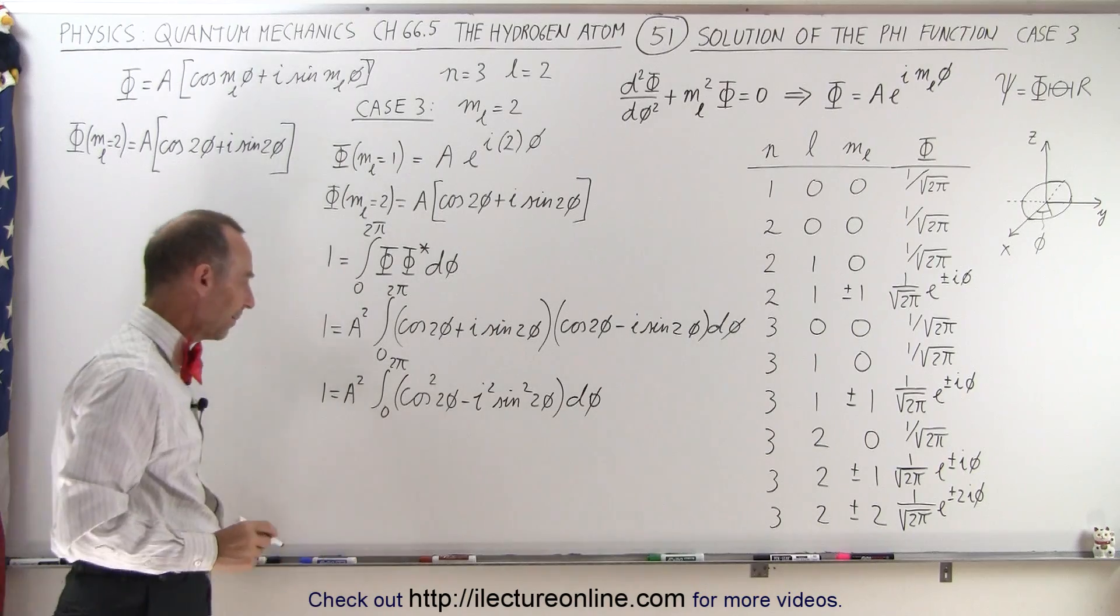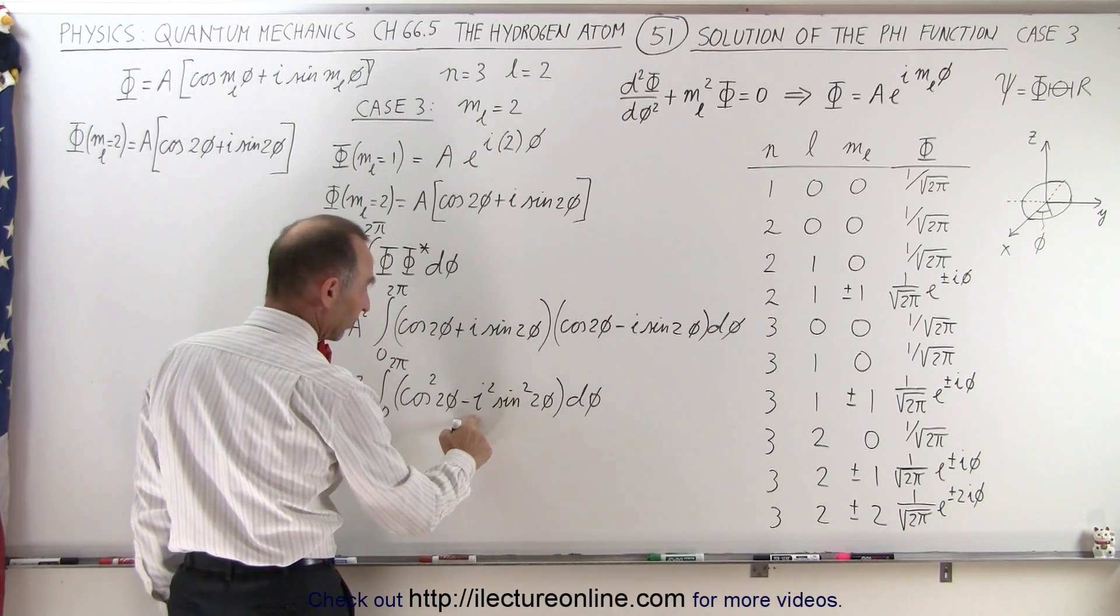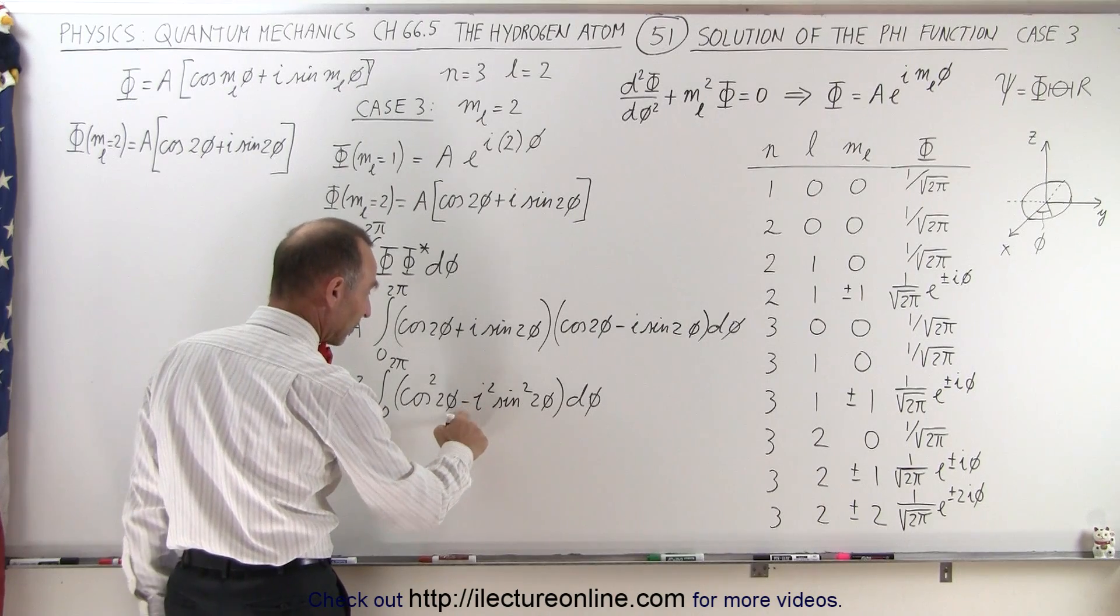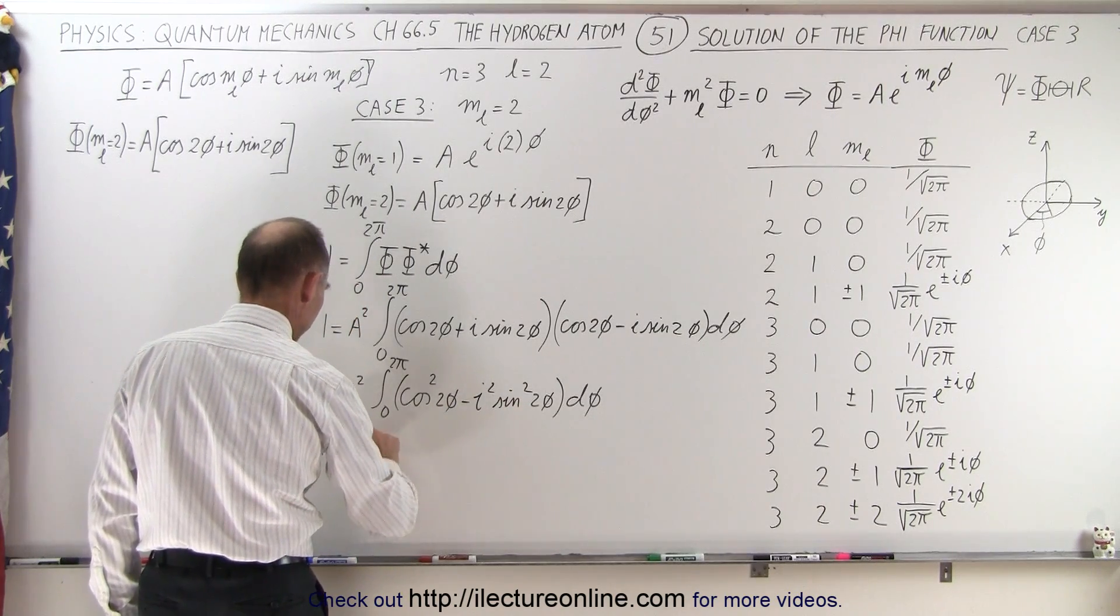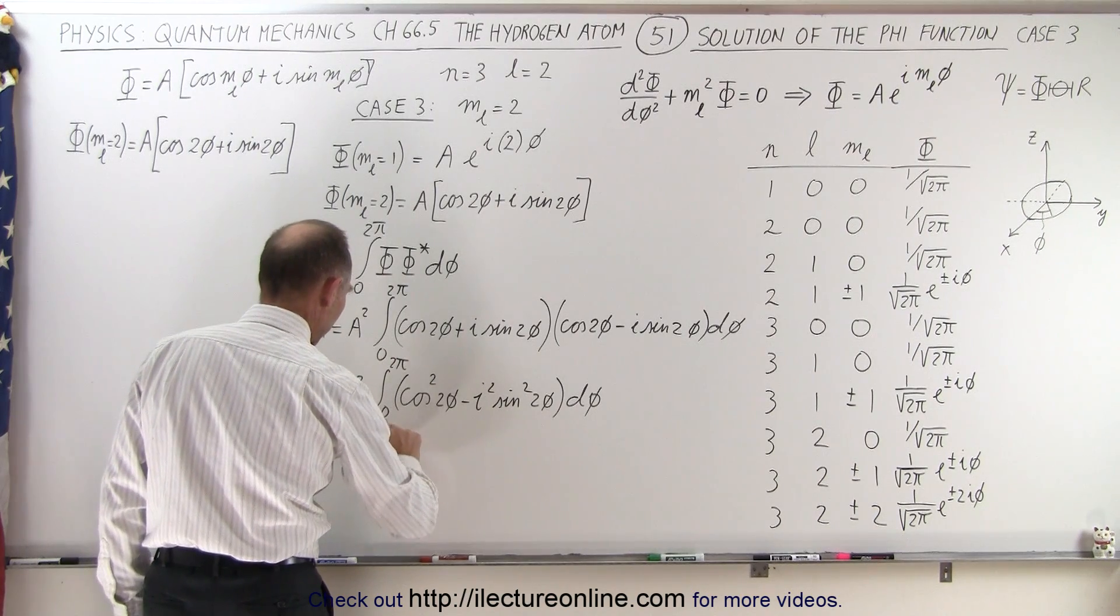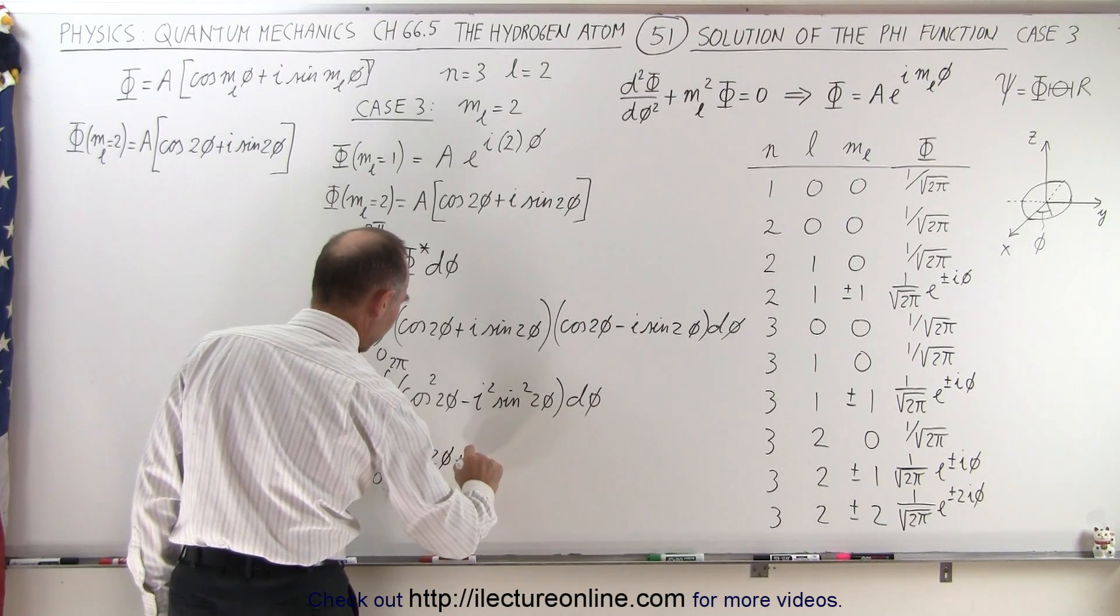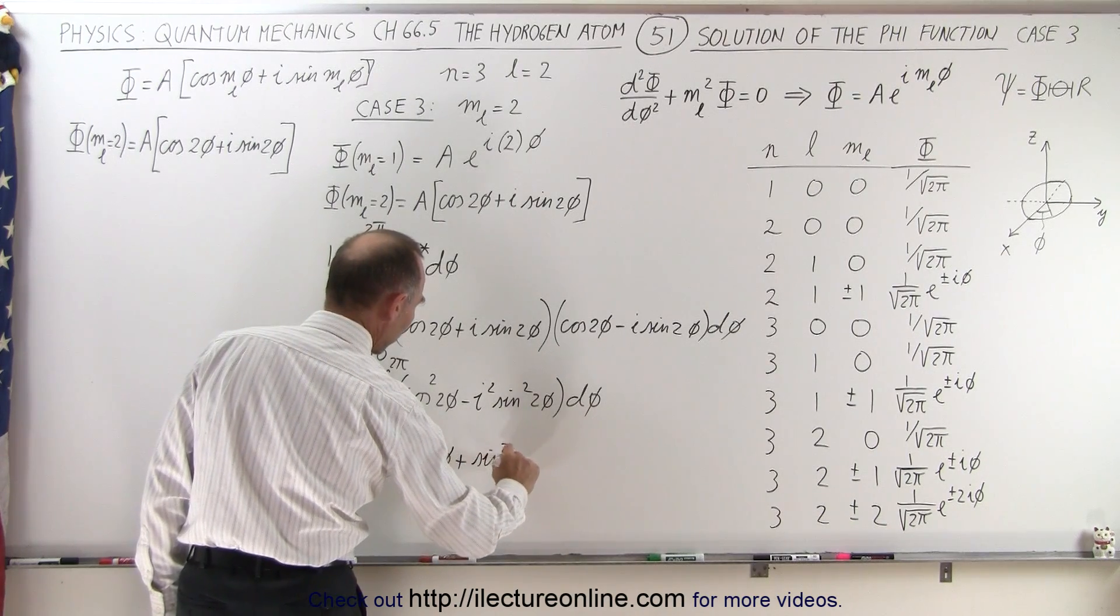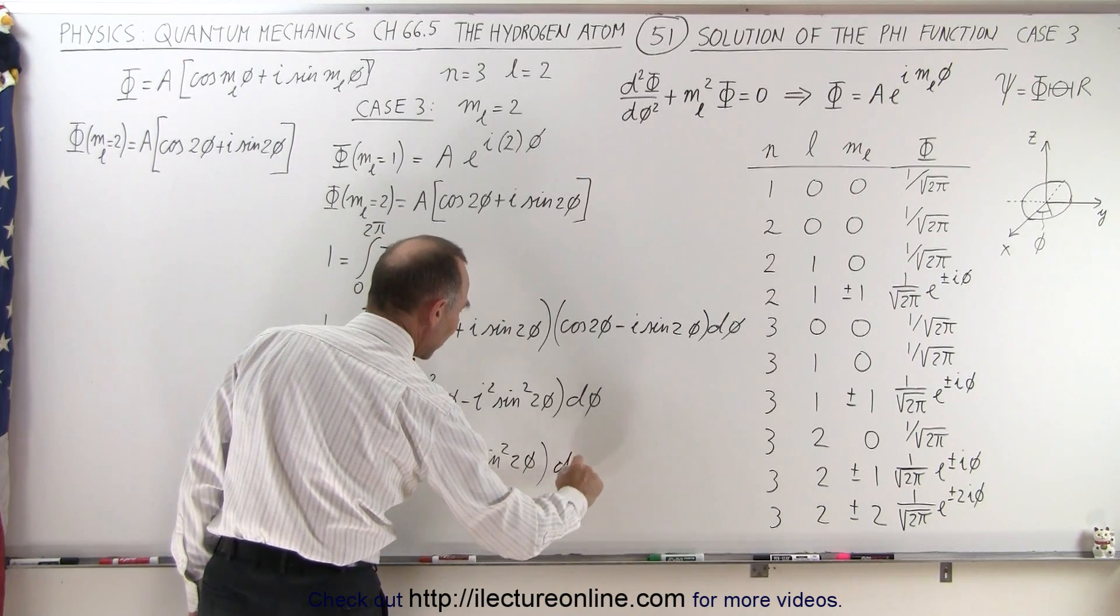Now, at first you say, wow, that looks like a difficult integral, but again, we know that i squared is equal to negative 1. The negative 1 times the negative becomes positive, and so we see that 1 is equal to a squared from 0 to 2π, the integral, and this becomes the cosine squared of 2φ plus the sine squared of 2φ, times dφ.